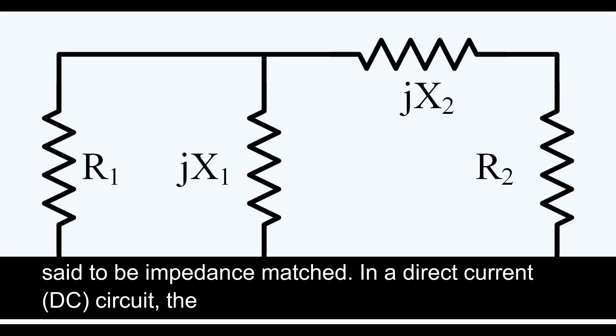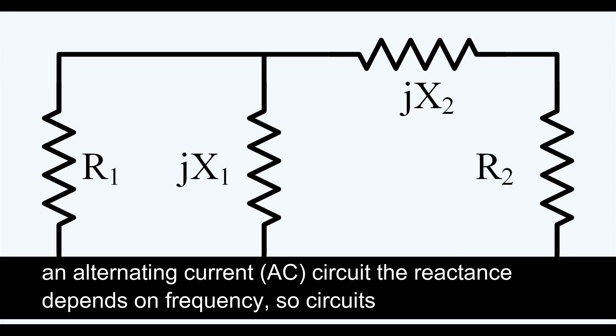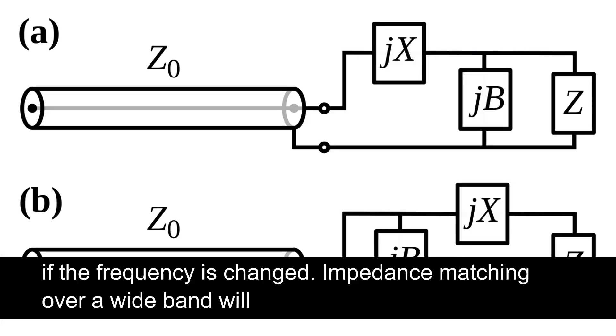In a direct current (DC) circuit, the condition is satisfied if the load resistance equals the source resistance. In an alternating current (AC) circuit, the reactance depends on frequency, so circuits which are impedance matched at one frequency may not be impedance matched if the frequency is changed.